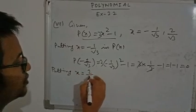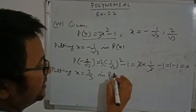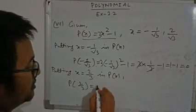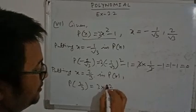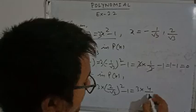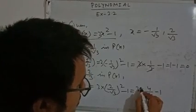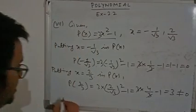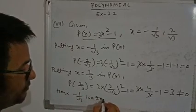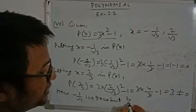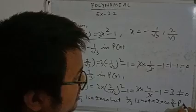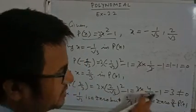Now putting X equals 2 by root 3 in P(X): P(2/√3) equals 3 into (2/√3) squared minus 1, which gives 4 by 3 minus 1, so (4 minus 3)/3 equals 1/3, which is not equal to 0. So minus 1 by root 3 is a zero, but 2 by root 3 is not a zero of P(X).